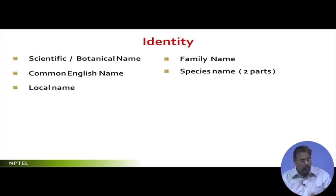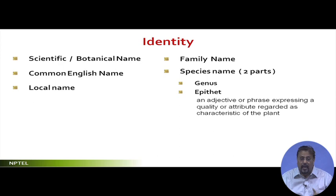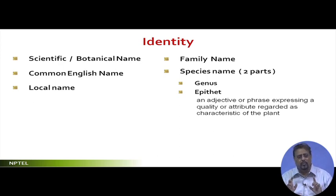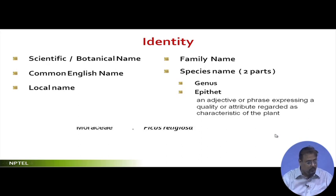The species name has two parts: one is called the genus and the other is called the epithet. The genus name is generally derived from the family, and the epithet expresses some special characteristic of the plant. For example, Ficus religiosa is the species name, belonging to the Moraceae family.